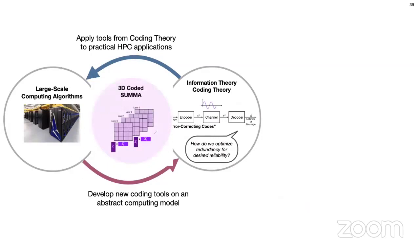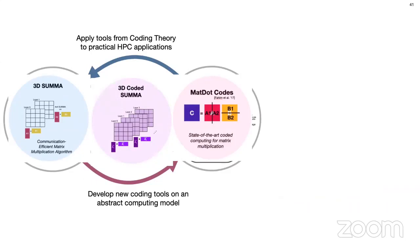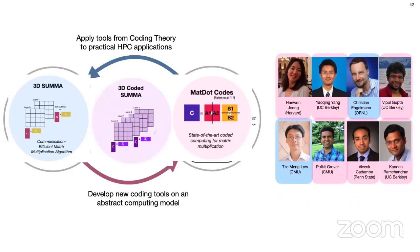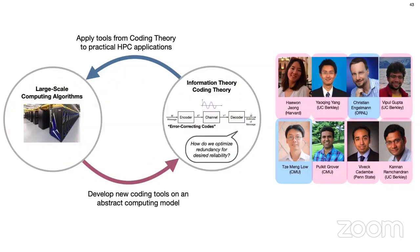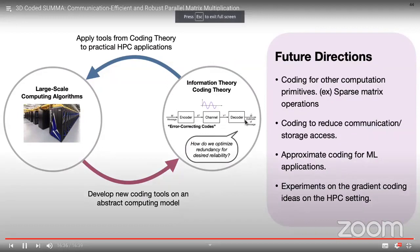In this work, we proposed the 3D Coded SUMMA strategy, which combines the 3D SUMMA algorithm and MatDot codes. This work went through a great collaboration — six of us including myself are from an information theory background, and two of us, Christian and Semeng, are experts in HPC. I think there is so much more that can be done through collaborations like this to bridge the gap between the two fields, and our work is just a baby step towards it. Thank you so much for your attention.